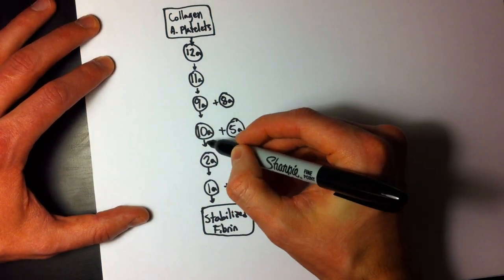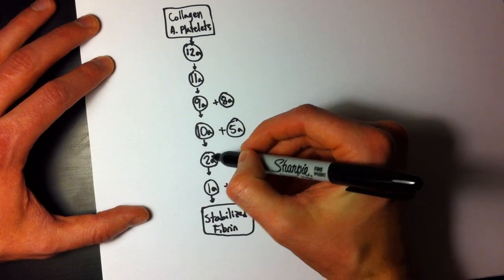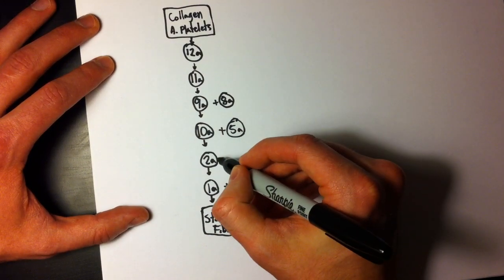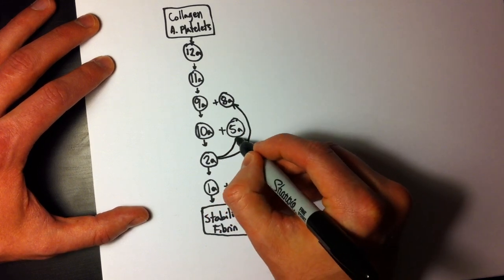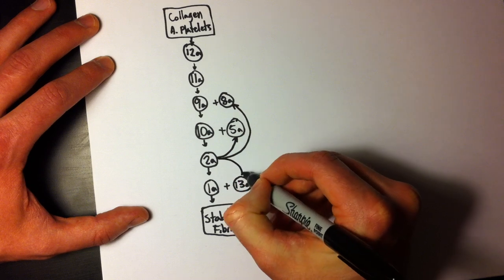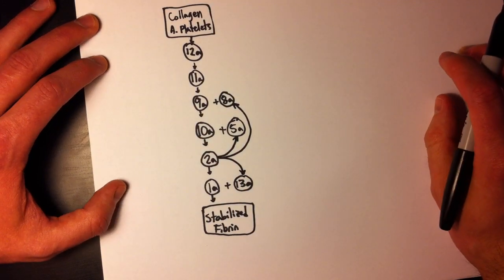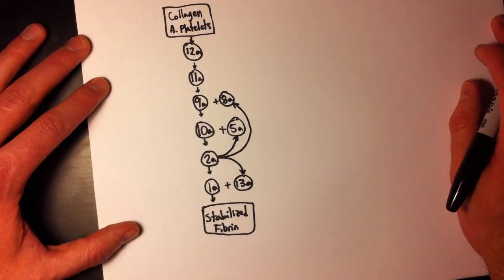So I'm just going to draw these arrows to indicate that that's what's helping this form. I'm going to draw arrows over here to show that 2A is helping form all of these: 8A, 5A, and 13A. So those ones all require thrombin in order to be formed.